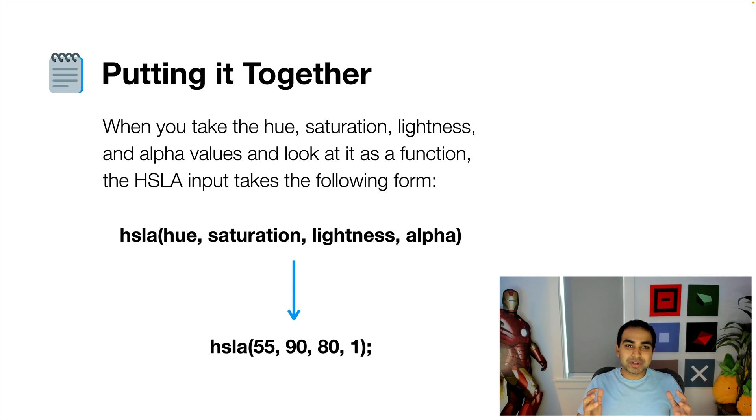And now that's really what turns it into the HSLA input. So HSLA takes hue, saturation, lightness, and alpha as its values. And you can see an example of an HSLA color would be something like at the bottom where I have HSLA 55, 90, 80, and 1. And the 55 is the hue, so it corresponds to a degree value.